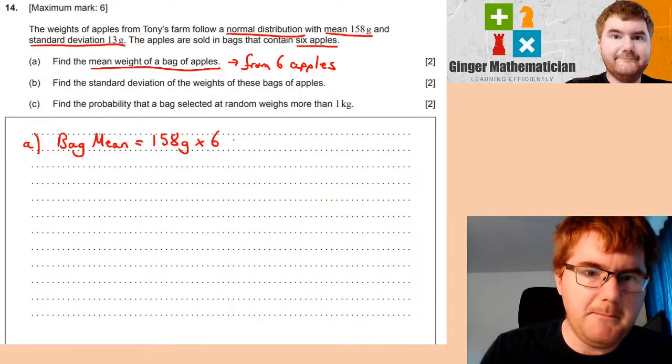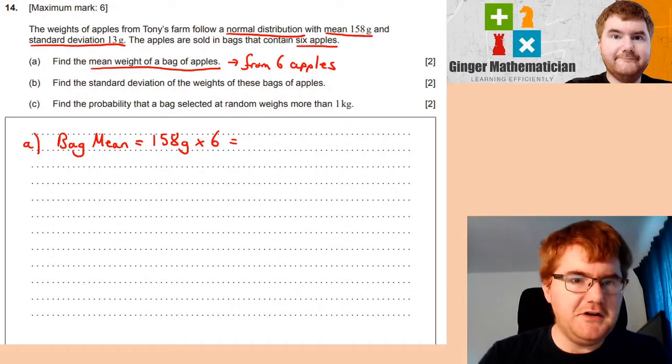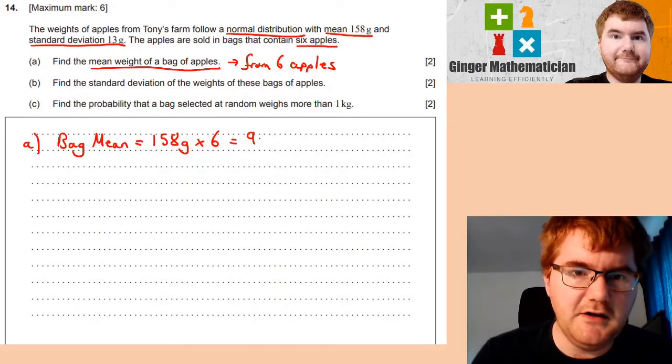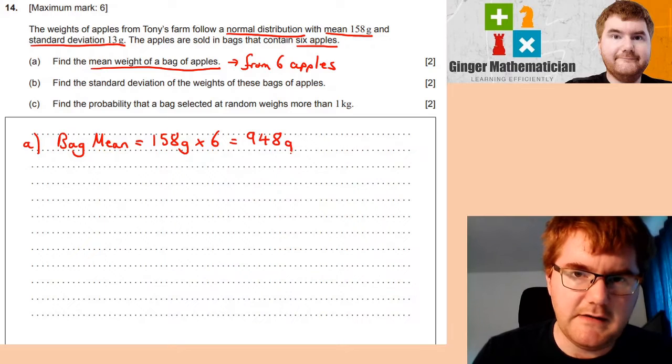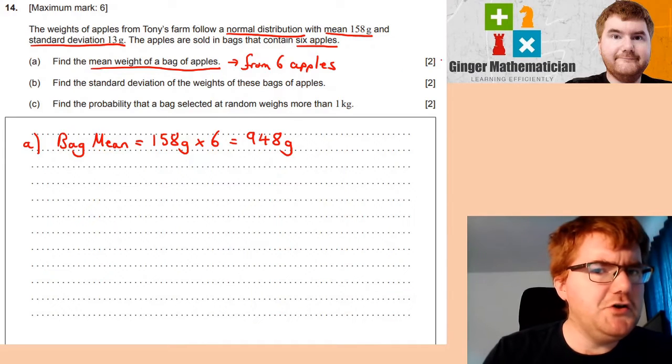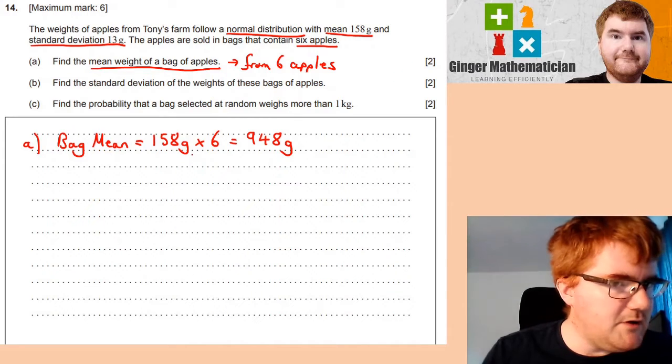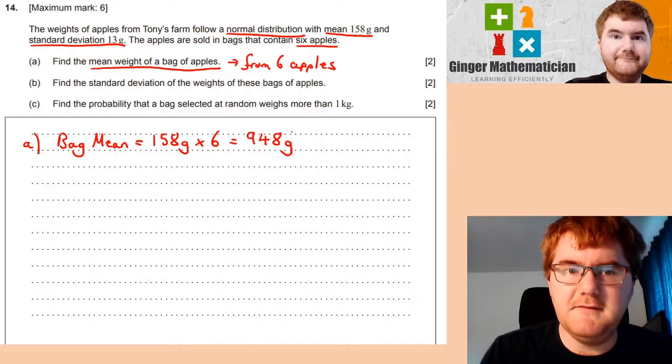Well, if you know the mean of one apple is 158, then the bag mean is just equal to 158 grams times six, which equals 948 grams. Notice that I've seen this as two marks, so I'm making sure I'm writing that working and then putting down the answer very clearly.